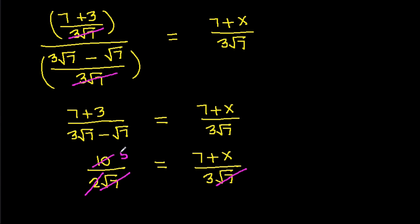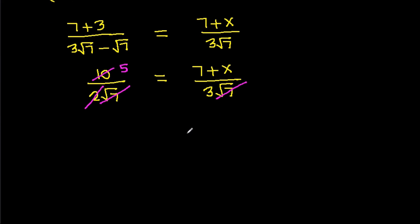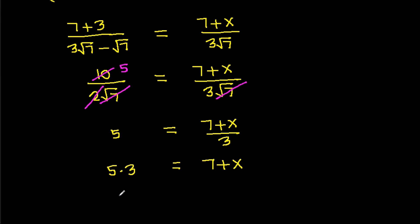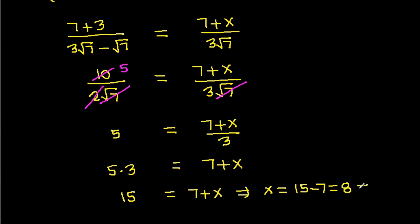So 5 equals 7 plus X over 3, meaning 5 times 3 equals 7 plus X, giving 15 equals 7 plus X. Therefore X equals 15 minus 7, which is 8. So X is 8.